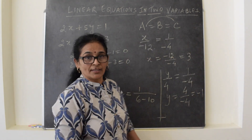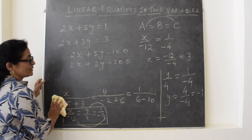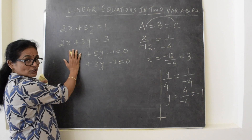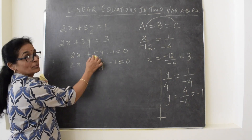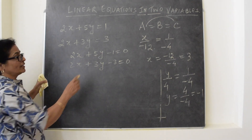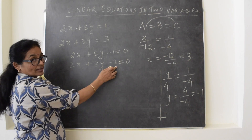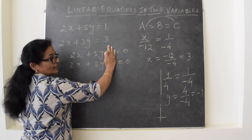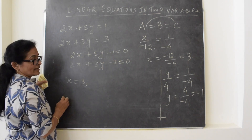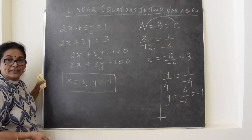By applying this rule, we have found the values of x and y. The rule is easy to learn: when you take x, hide the coefficients of x, take the other two and cross multiply — that is b1c2. We are multiplying in this way, which is why this method is called the cross multiplication method: b1c2 minus b2c1. Similarly, for y it is c1a2 minus c2a1, and for the third term it is a1b2 minus a2b1. So, we have got x equals 3 and y equals minus 1 for these two equations using the cross multiplication method.